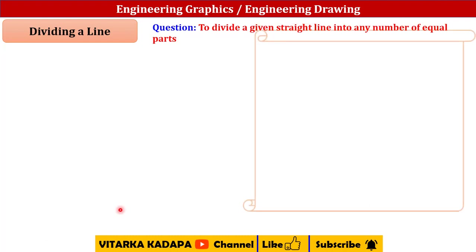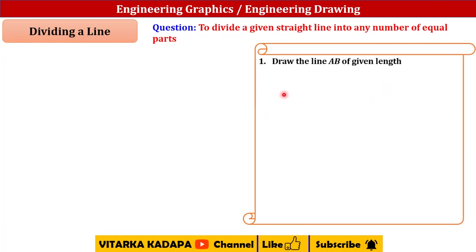Here I need to draw a line AB of given length, for example say it has some 70 mm like that. Now the second procedure is draw another line AC making an angle of less than 30 degrees with AB.